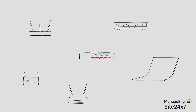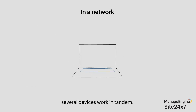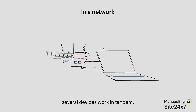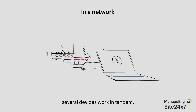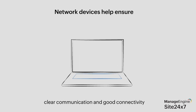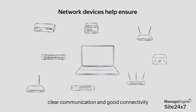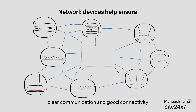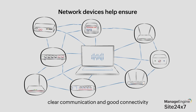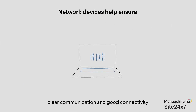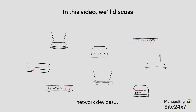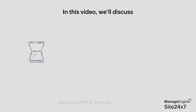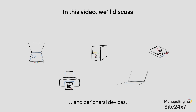Did you know several devices work in tandem behind the scenes in a network to ensure that relevant information reaches you accurately anytime you want? Hundreds or thousands of such devices, called network devices, could operate in a computer network to ensure clear communication and good connectivity. In this video, we will discuss a few network devices and common peripheral devices used in a network.